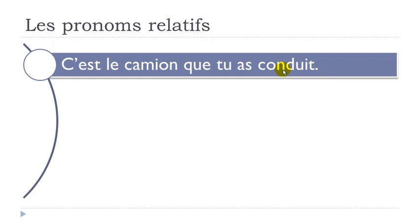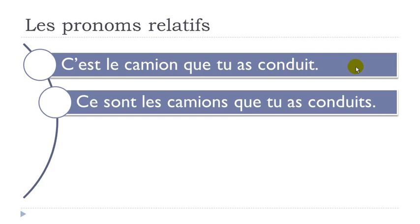VOICI L'HOMME DONT TOUT LE MONDE A PARLÉ — DONT comes after the first clause and before the subject and verb of the relative clause. The position doesn't change. You just put it there and continue: subject, verb.